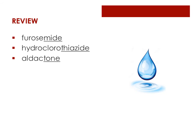Let's quickly review our diuretics. Furosemide, ending in -mide — those are our powerful loop diuretics; watch for hypokalemia. Hydrochlorothiazide — those are our thiazide diuretics; again, watch for hypokalemia. And aldactone, our aldosterone inhibitors — these are potassium-sparing, so watch for hyperkalemia.